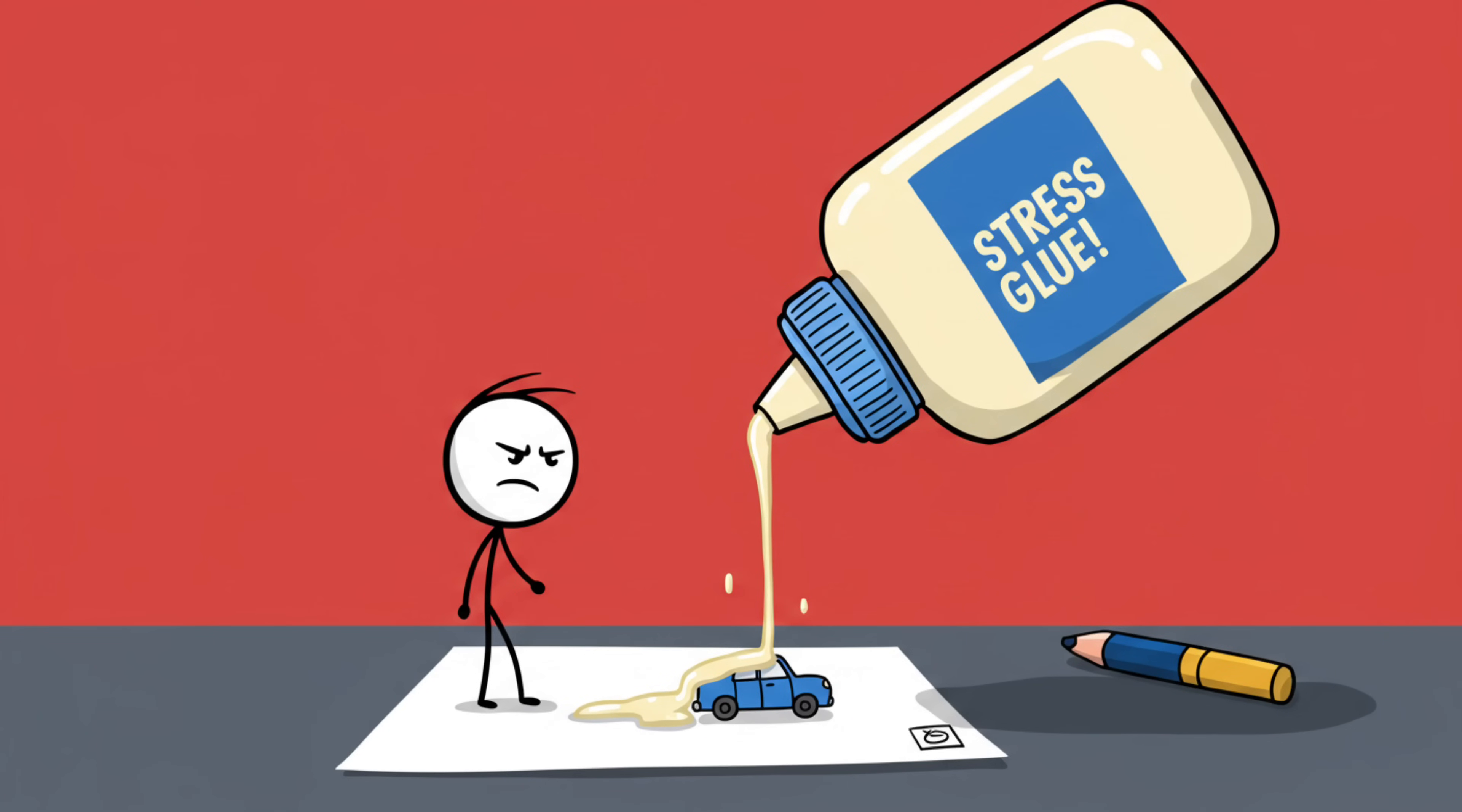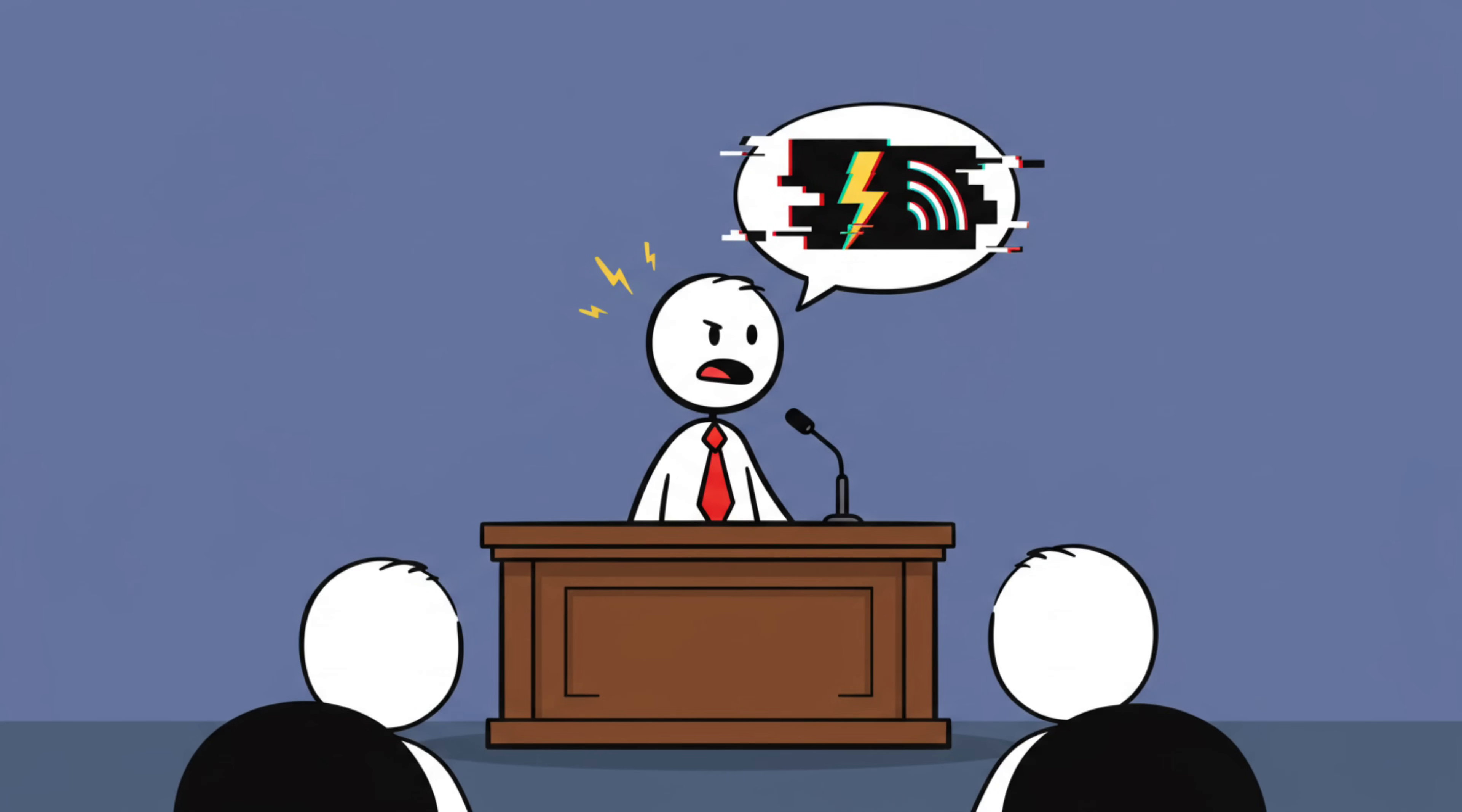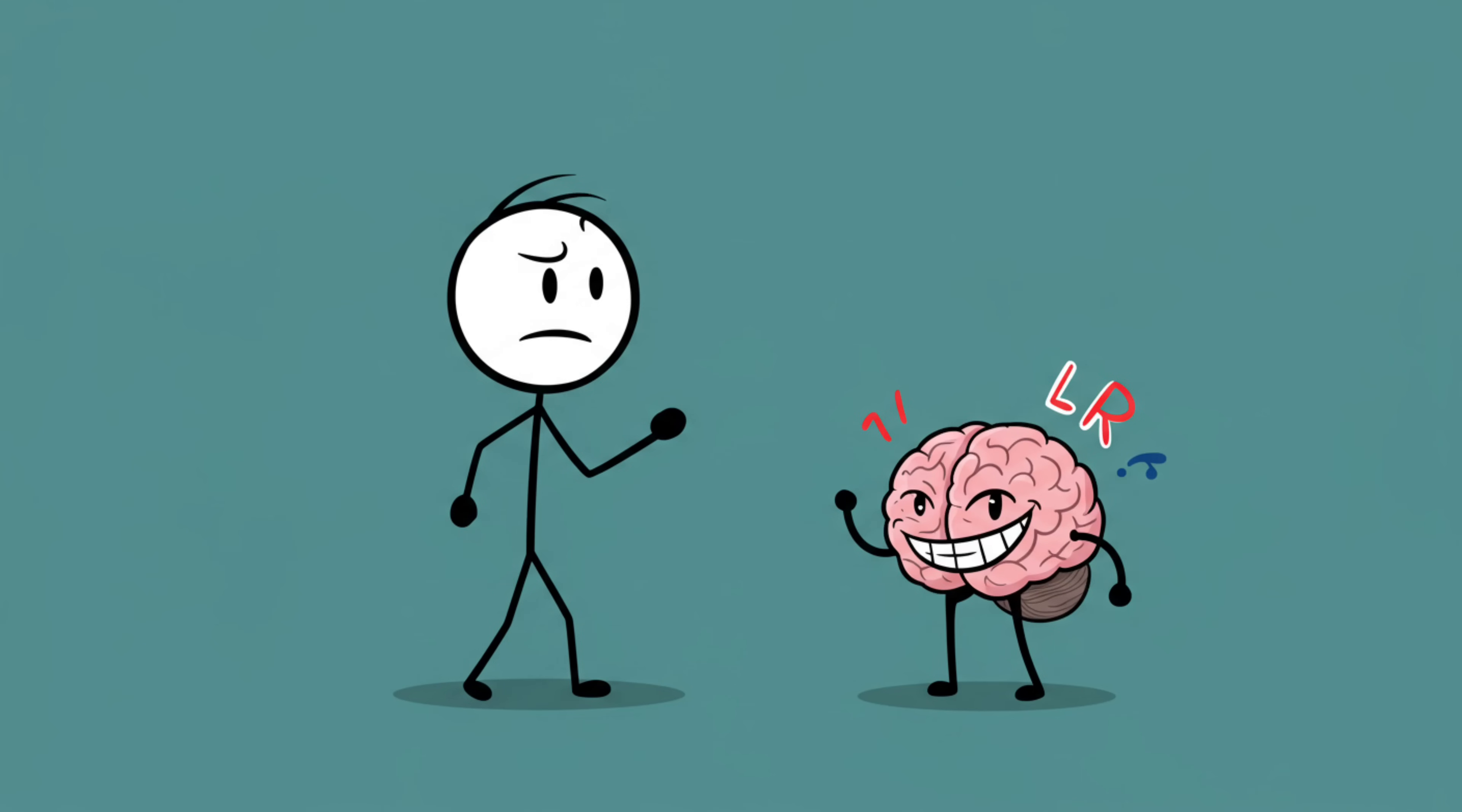Why does this happen? Stress makes you latch onto whatever detail feels right in the moment, then seals it in with emotional glue. The stronger the stress, the stronger the glue. This is why eyewitness testimonies after high-stress events, like accidents or robberies, are often about as reliable as a Wi-Fi connection in a storm. People aren't lying. Their brains are just overconfident liars.